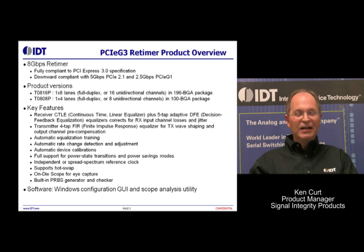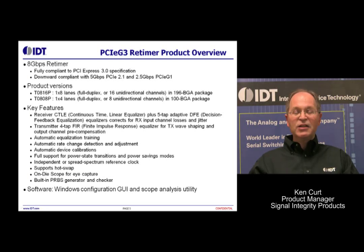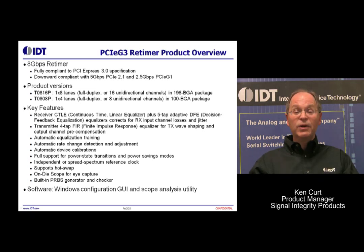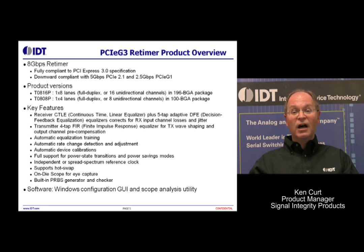The transmitter portion of this device includes a four-tap FIR filter. This also exceeds PCI Express Gen3 requirements, and its purpose is to support output waveform shaping or pre-compensation of the signal for driving across long traces. Not only can we adjust the transmit amplitude, we can adjust the waveform characteristics or shape, the slew rates, as well as the I/O terminations for input and output. So there's tremendous flexibility in the I/O capabilities and configuration of this device.